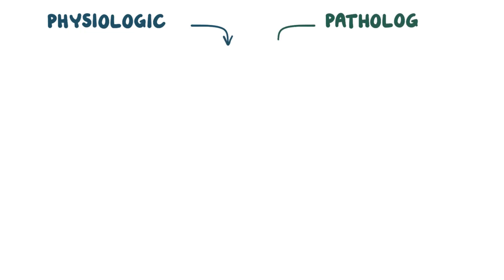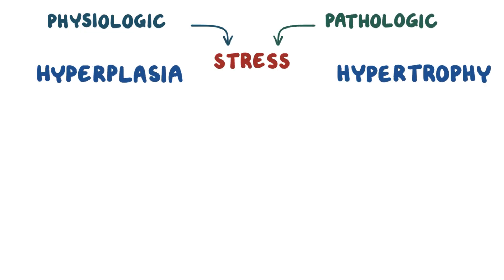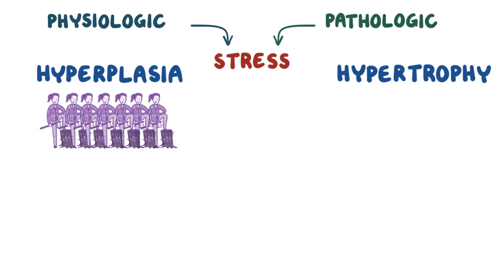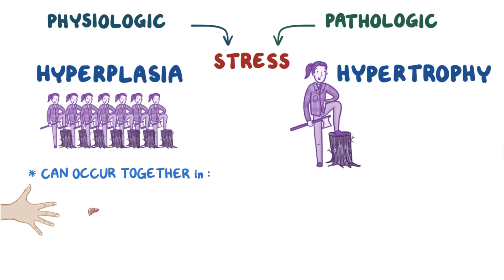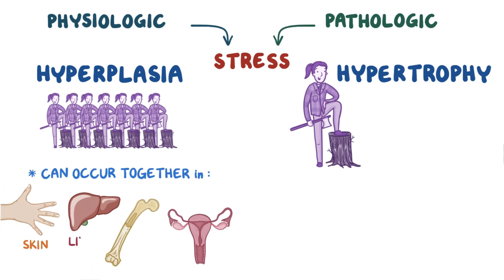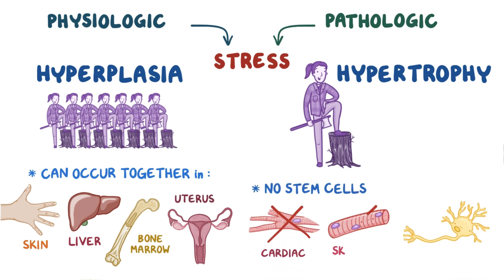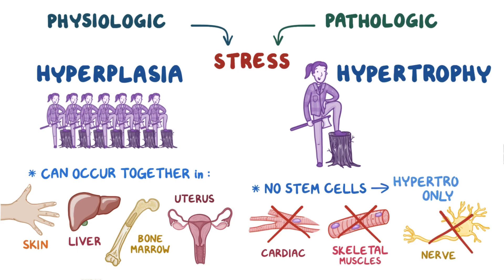As a quick recap, whenever an organ encounters any sort of physiological or pathological stress, it adapts by hyperplasia or hypertrophy. You can remember that as hyperplasia: bigger pack, and hypertrophy: tough lumberjack. In general, hyperplasia and hypertrophy happen together in organs with stem cells, like the skin, liver, bone marrow, or uterus. Organs that lack stem cells, like the heart, skeletal muscle, and nerves, can only undergo hypertrophy.